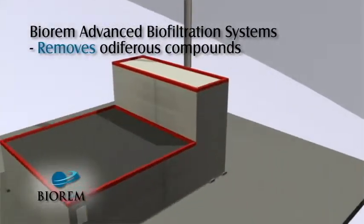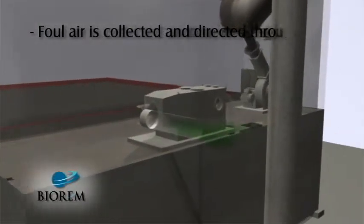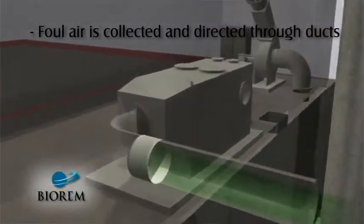Processed air is collected from various sources and drawn to the inlet of the odor control system. A ventilation fan is used to force the foul air along a collection duct manifold.